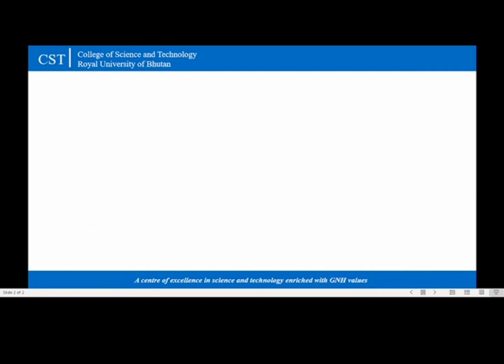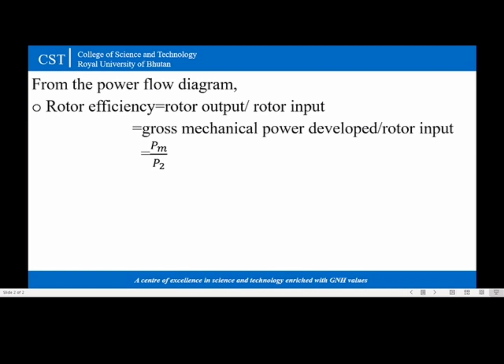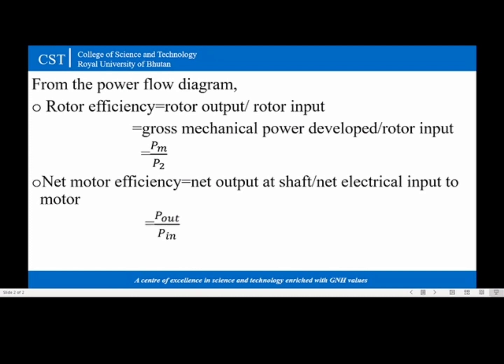From the power flow diagram we can derive rotor efficiency, rotor output over rotor input, which is the gross mechanical power developed over the rotor input, that is PM over P2, and net motor efficiency, net output at shaft over net electrical input to the motor.